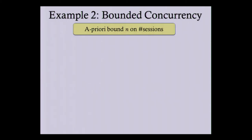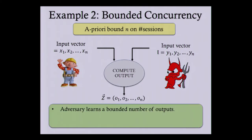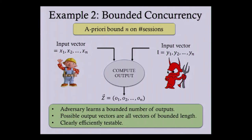Moving on to bounded concurrency: there is an a priori bound on the number of sessions the adversary can run in the ideal world. So if the input vector is y1 up to yn where n is bounded, the adversary can learn all these outputs. Since it learns only a bounded number of outputs, it learns only a bounded amount of information. All possible output vectors are vectors of this bounded length n, which is clearly efficiently testable.